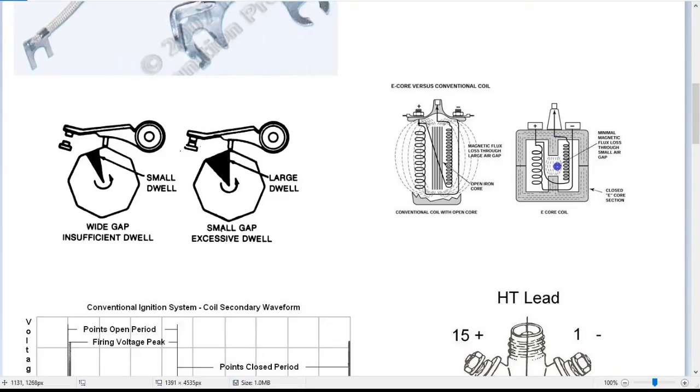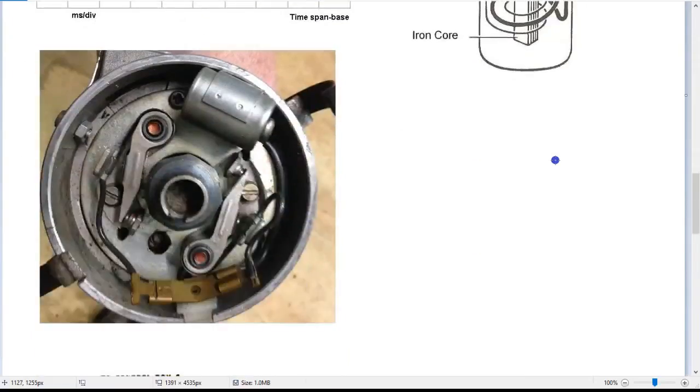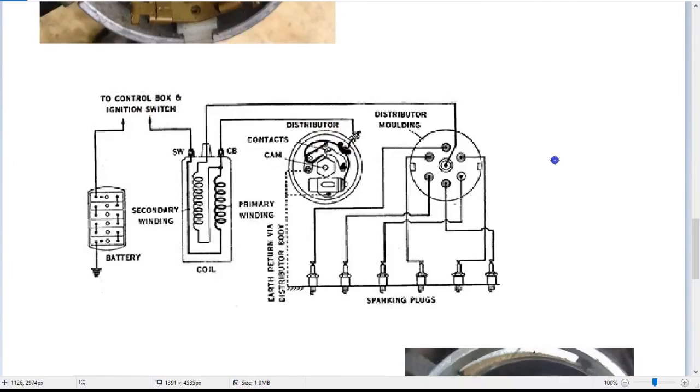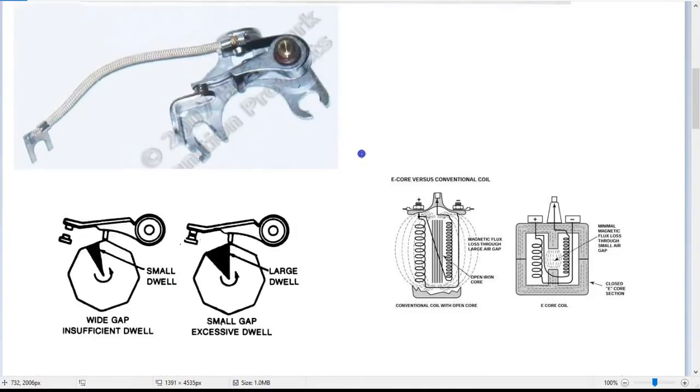Now the method of switching the coil windings on and off is using the ignition points, which open and close with the movement of the cam which is on the rotor. When they close, the voltage energizes the coil's primary coil.